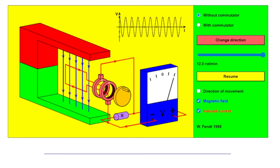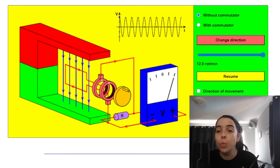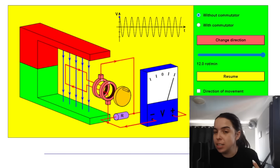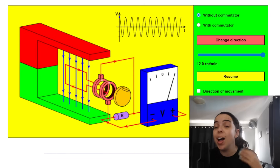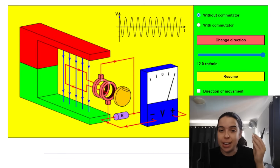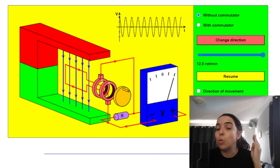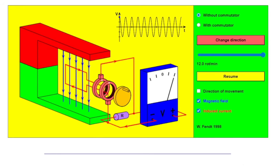The first thing to understand is the difference between alternating current and direct current. When you think of alternating, the word 'alternate' means to change — so alternating current changes direction. Direct current, think of current flowing in one direction essentially.